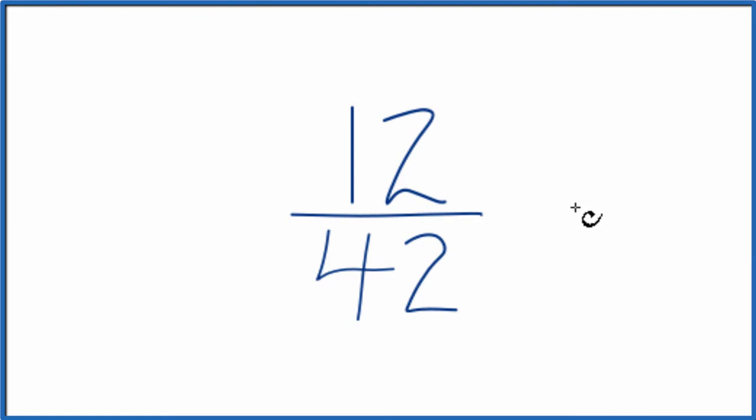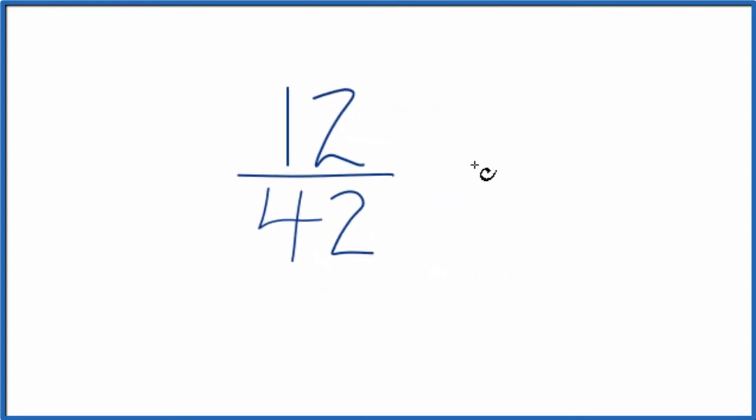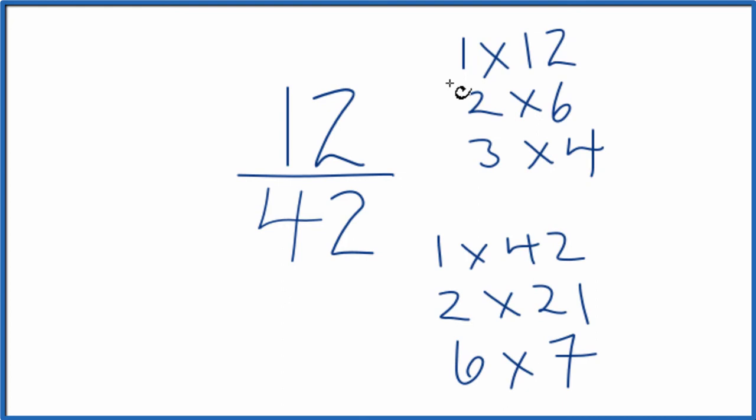To do that, we need to find a common factor, one that goes into 12 and 42. These are the factors for 12 and 42. We want to find the greatest common factor, the greatest number that goes into 12 and 42. It looks like six. That's the greatest common factor.